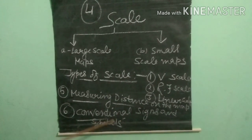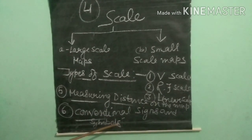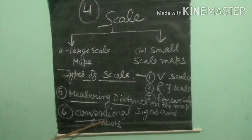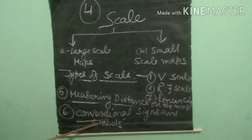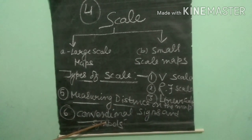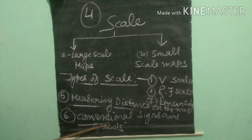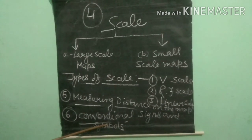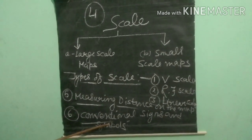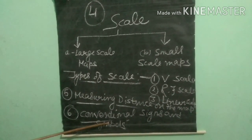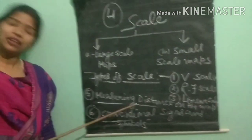These symbols give a lot of information in a limited space. With the help of these symbols, maps can be drawn easily. Maps have a universal language — these are called conventional signs and symbols that can be understood by all. I think all of you understood. Thank you.